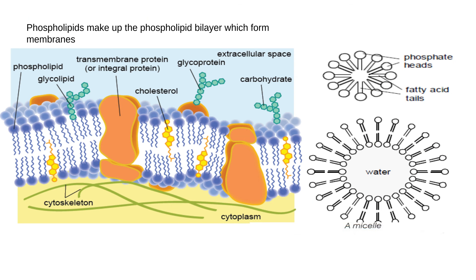Phospholipids create what's known as a phospholipid bilayer. The reason we have a bilayer — bi stands for two — is because there is water on the outside of the cell and also water inside the cell. Therefore those fatty acid tails orientate away from water into the middle of the membrane, where they are protected from the water by the hydrophilic heads. That is how we get the bilayer. If water surrounded everywhere including the middle, they would arrange themselves into a micelle structure instead.